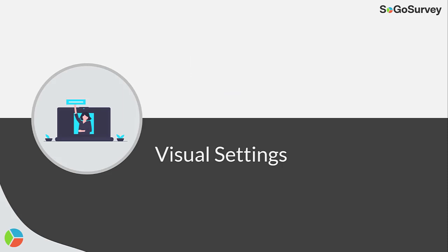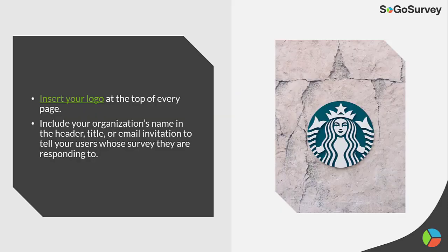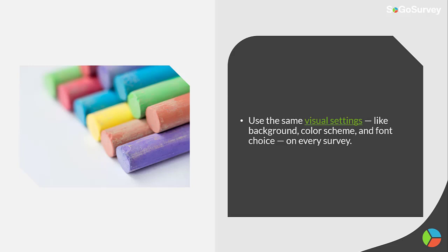First, we'll start with visual settings. Insert your logo at the top of every page. Include your organization's name in the header, title, or email invitation to tell your users whose survey they are responding to. Use the same visual settings like background, color scheme, and font choice on every survey.